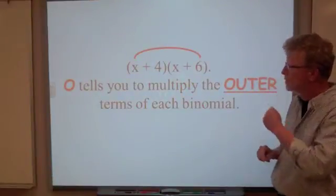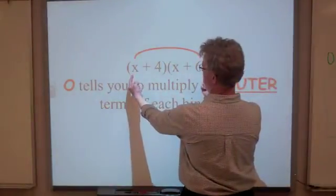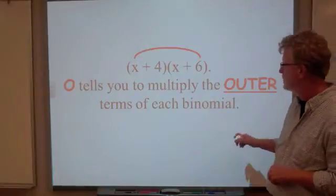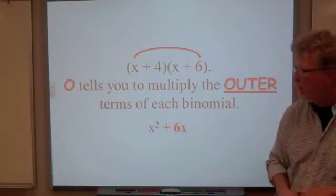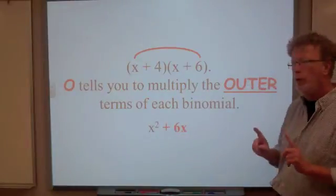Now, the O tells us to multiply the outer terms. So these two are on the outside, so we're going to multiply them. We multiply the x times the 6, and that's going to give us 6x. You can see we're building up our answer as we go. So O for outer.